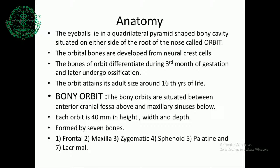Coming to the anatomy of the orbit, the eyeballs lie in a quadrilateral pyramid-shaped bony cavity situated on either side of the root of the nose, called the orbit. The orbital bones are developed from neural crest cells. The bones of the orbit differentiate during the third month of gestation and later undergo ossification. The orbit attains its adult size around 16 years of life.